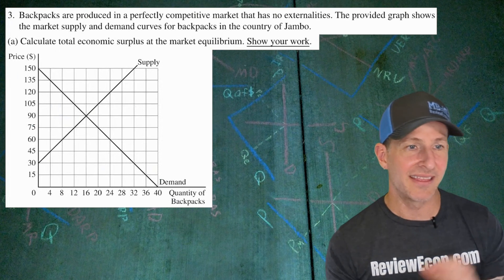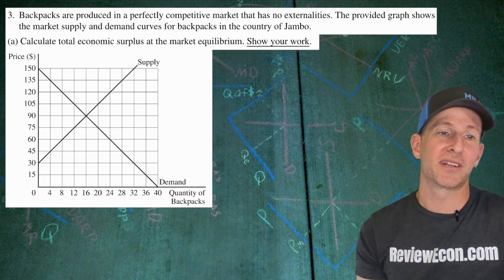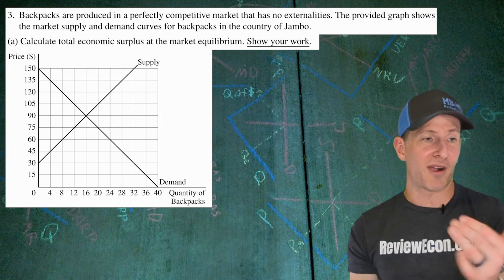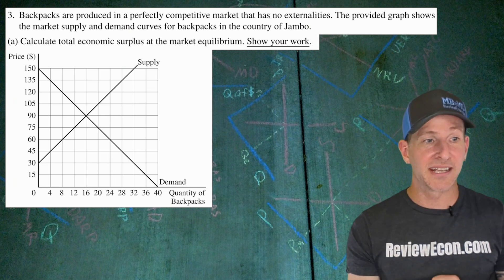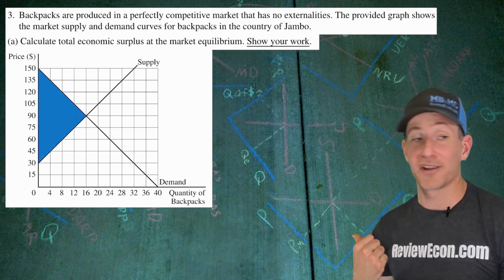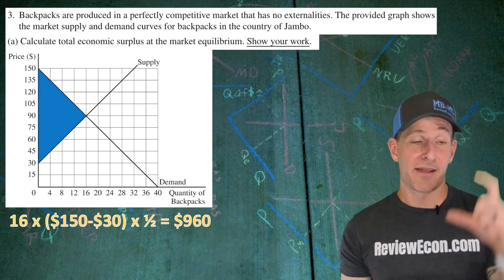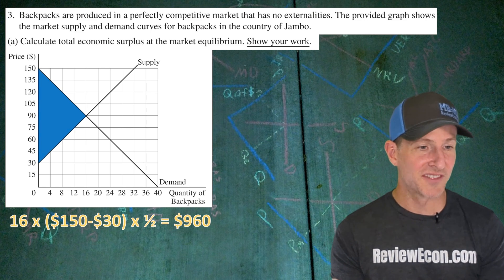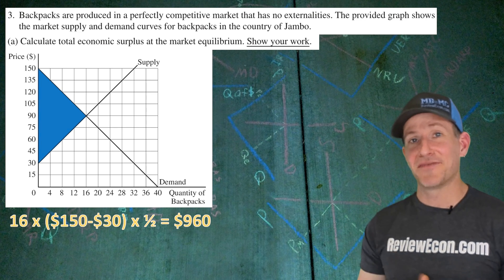On to number three: backpacks are produced in a perfectly competitive market with no externalities. The graph shows the market supply and demand curves for backpacks in the country of Jonbo. Calculate the total economic surplus. Total economic surplus is the area of the large triangle — 16 units times $120 times one half — giving $960. The $120 is the gap between the highest price on demand and the lowest price on supply at the axis.